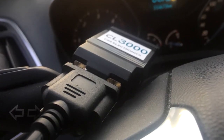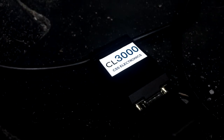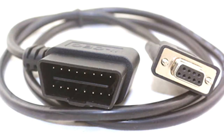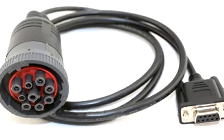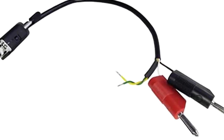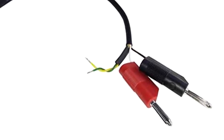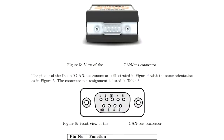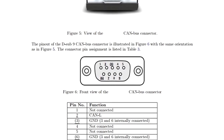The logger uses a DB9 connector, so you may need an adapter cable. For example, in a car you would need a DB9 to OBD2 adapter. On our website, we offer adapters for OBD2, J1939, and generic use. You can also choose another adapter — just make sure the pin out matches the CANlogger X1000.